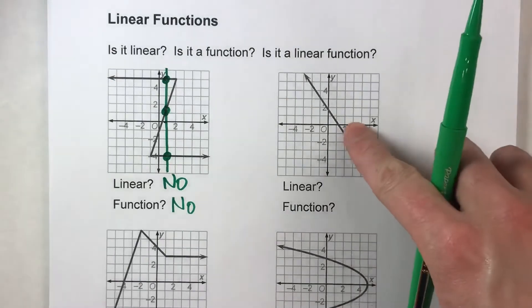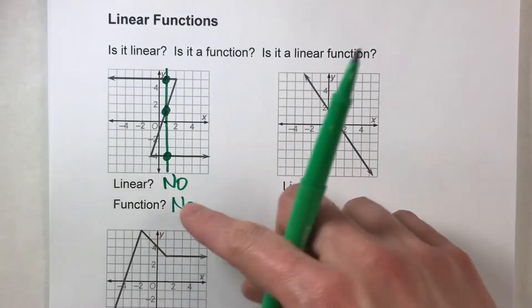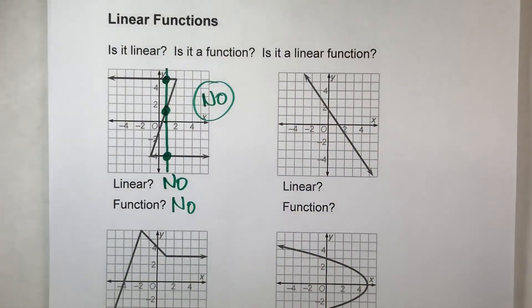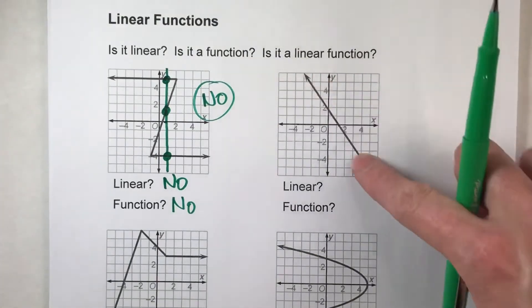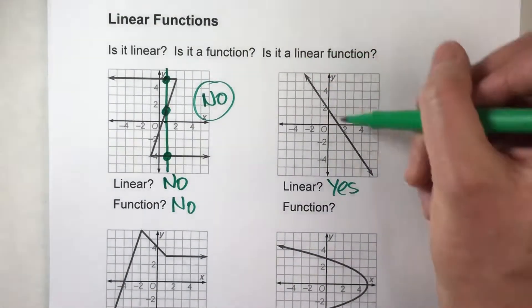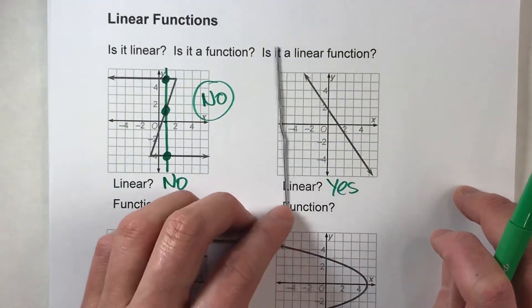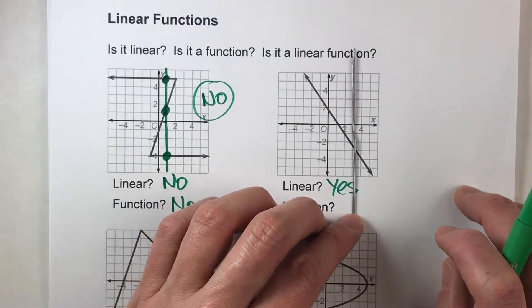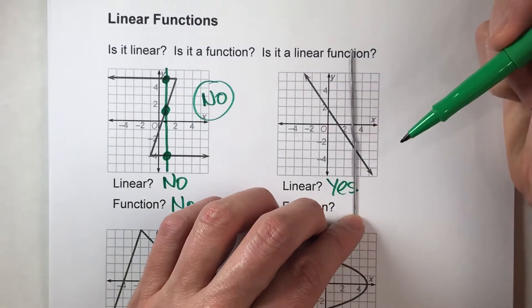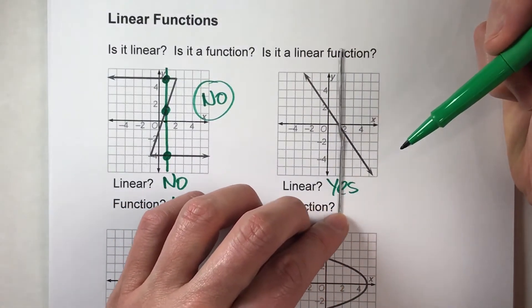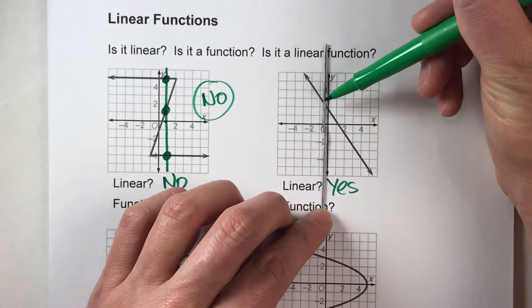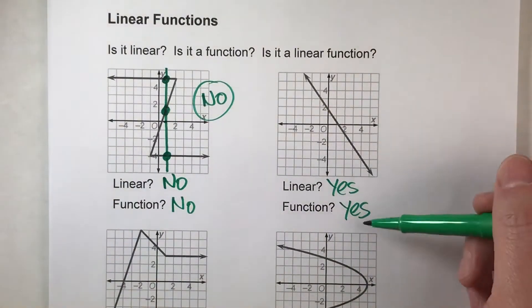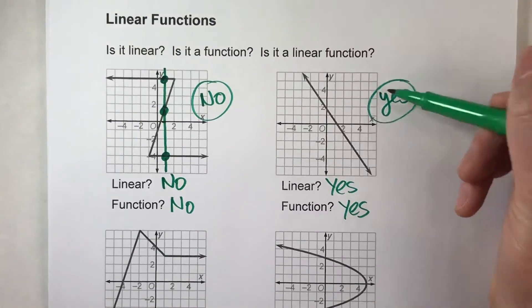By the way, that first graph is not a linear function because it's neither linear nor a function. Now for this next one: it is a straight line, so it's linear. Is it a function? Here's my vertical line — notice as I move this across the grid it never touches the graphed line in more than one spot at any given time. This passes the vertical line test because for every x value there's only one possible y value. So yes, this is a function, and since it's linear and a function, yes, this is a linear function.